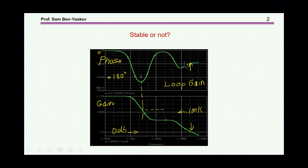At the crossover point the phase is about 90 degrees, so we have a very nice phase margin. However, looking further, we see the phase going down below minus 180 degrees — a phase reversal — while the gain at this point is very high, in this case over 100,000. One would think that with positive feedback and high gain the system will oscillate. Well, not necessarily — and that is the point of this video.